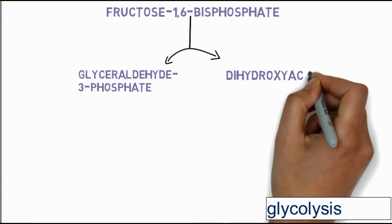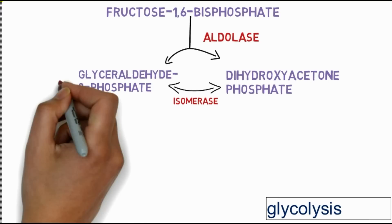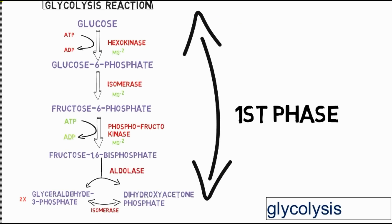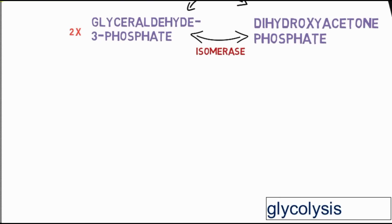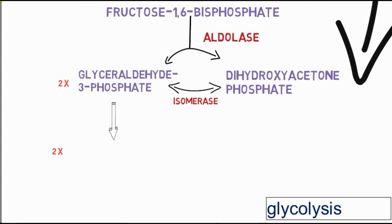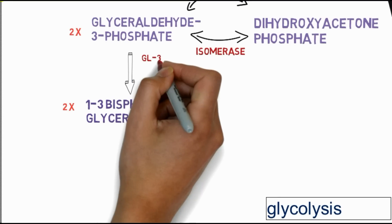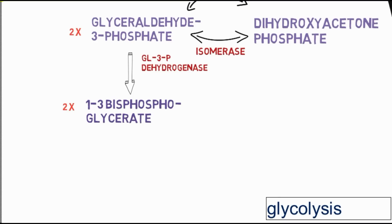Fructose-1,6-bisphosphate is converted into glyceraldehyde-3-phosphate (G3P) and dihydroxyacetone phosphate by the aldolase enzyme. The dihydroxyacetone phosphate is then converted into glyceraldehyde-3-phosphate by isomerase enzyme, giving two molecules of G3P. This completes the first phase, in which energy is utilized.